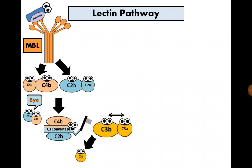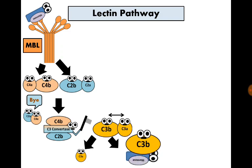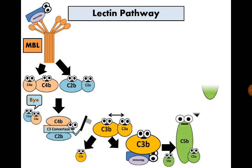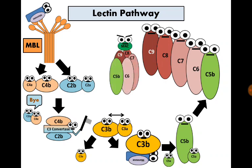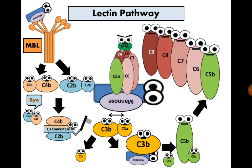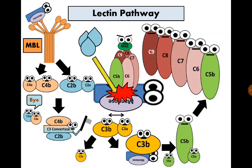C3 convertase divides C3 into C3A and C3B. C3B attaches to the surface of the bacteria carrying mannose, and this stimulates cleavage of C5 into C5A and C5B. C5B attaches to C6, C7, C8, and C9 to form the membrane attack complex, which attaches to the surface of the bacteria carrying mannose, forming pores in its wall. Fluid enters inside the bacteria, causing osmotic lysis.